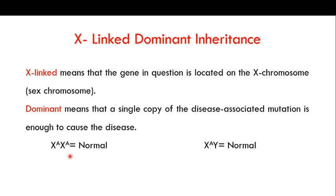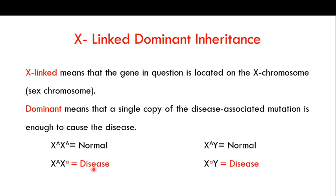In the normal condition, females have two copies — if both X chromosomes carry the normal allele (represented by capital A), that female is normal. The same applies to males: they have only one X chromosome, and if it carries the normal allele, that male is normal.